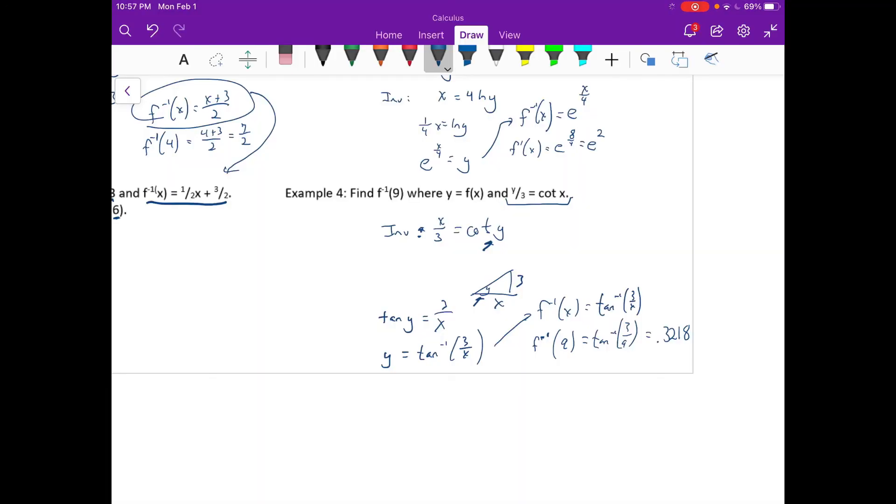0.3218. We talked about explicit and implicit equations, and then inverses and how to find inverses.